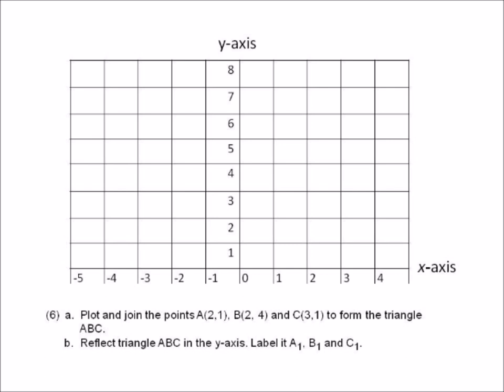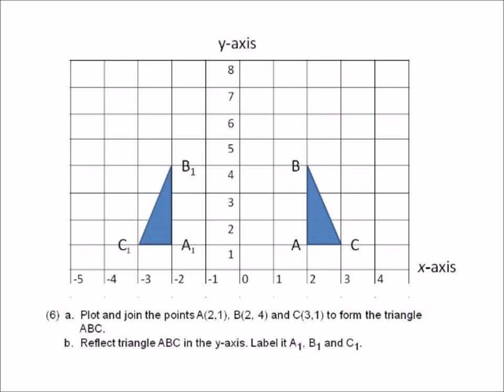There you have triangle ABC. Now reflect that triangle in the y-axis. Find the y-axis and draw it on the other side — the same distance each point is away on the right, you put each point the same distance away from the y-axis on the left. A was two lines away, so put it two lines away. B was two lines away at the top — put two lines away. C was three lines away on the right, so put three lines away on the left. That's your triangle reflected in the y-axis.